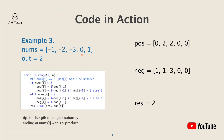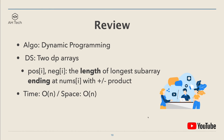Next we encounter a zero. Because we initialized both DP arrays to zero, the values won't be updated and will remain zero. You can think of it as resetting the subarray length to zero — that's the main reason we initialize the DP states to zero. Finally, for the last positive number, we update positive[i] to 1. The final result is 2.